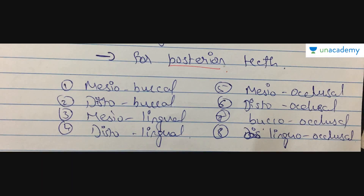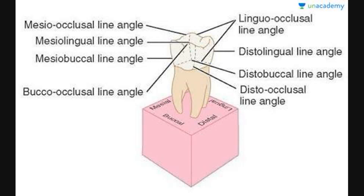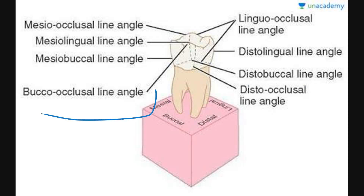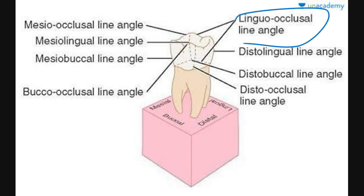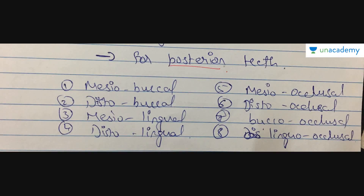Now for the line angles of posterior teeth, shown in diagrammatic view: mesiocclusal and distocclusal line angles, mesiolingual — where the mesial and lingual surfaces meet — and distolingual line angle. Then mesiobuccal and distobuccal, because this is a posterior tooth with a buccal surface and occlusal surface. Also the buccoocclusal line angle and the distolinguoocclusal line angle. These are the line angles of the posterior teeth.